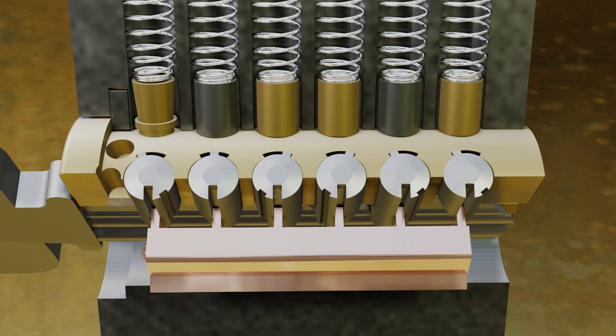In a regular pin tumbler lock, it doesn't really matter how much the pins spin, but in a Medeco, they need to be concerned with reliability. If the pins can rotate too much, the key might not be able to orient the pins correctly, and has a possibility of not working without these tabs.